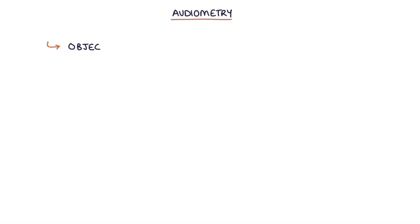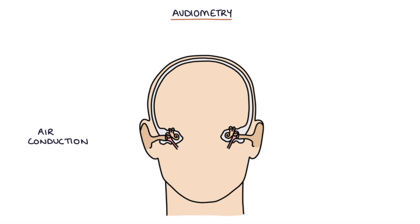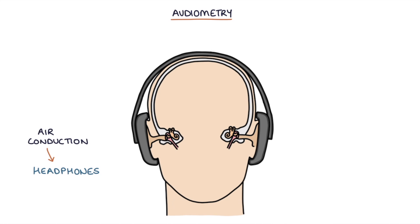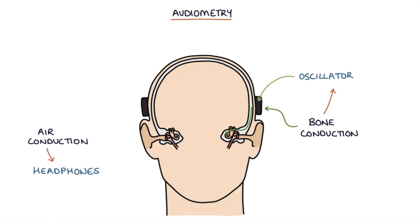Audiometry involves objectively testing a patient's hearing by playing a variety of tones and volumes. Air conduction is tested by using headphones, and bone conduction is tested using a device called an oscillator that delivers sounds directly to the bones of the skull.